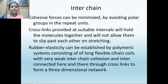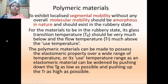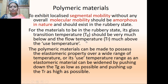Cross-links at suitable intervals hold the molecules together and do not allow them to slip past each other during stretching. Rubber elasticity can be established by polymeric systems consisting of long flexible chain coils with very weak interchain cohesion, interconnected through cross-links to form a three-dimensional network. The polymeric material should exhibit localized segmental mobility without overall molecular mobility, should be amorphous in nature, and should exist in a rubbery state. For materials to be in the rubbery state, the glass transition temperature should be very much below the use temperature.